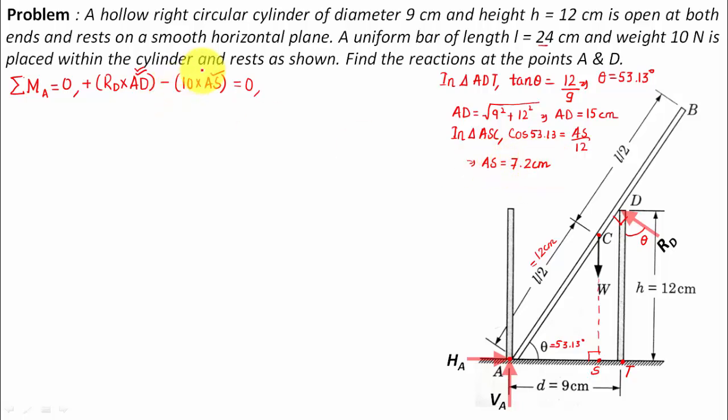Now two ticks done, all the values calculated. Let me rewrite this: RD will work out as 10 times AS over AD. So we've got the value of AD here, 15, and we've got the value of AS, that's 7.2. You just need to put these two values over here and you will eventually get the value of RD is equal to 4.8 Newtons. So the value of reaction at D has been calculated.